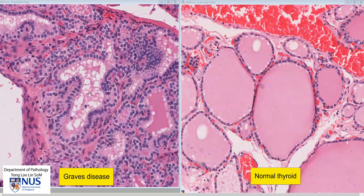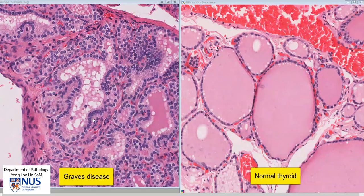We can see when we compare at the same magnification that the nuclei of the follicular cells are very slightly larger in the case of Graves' disease. And also that the cells do have this taller columnar shape, as opposed to the very low cuboidal cells in the case without Graves' disease.